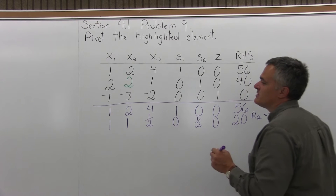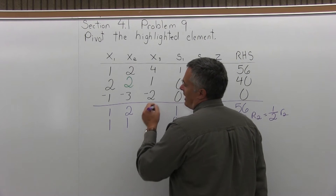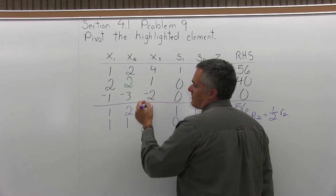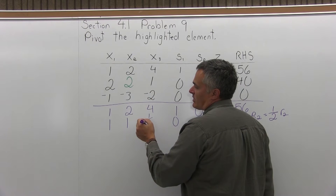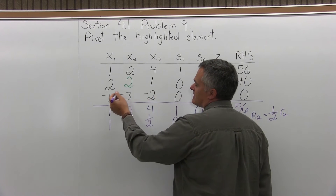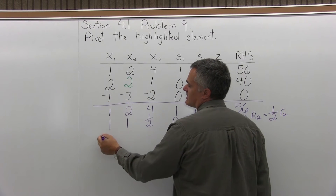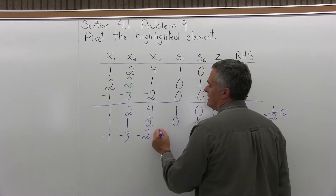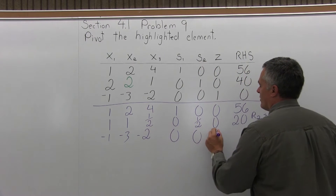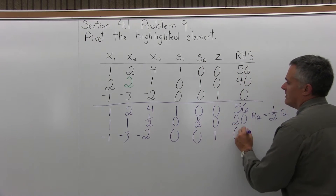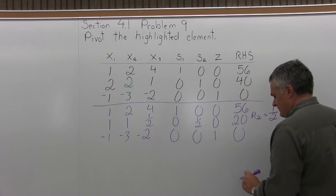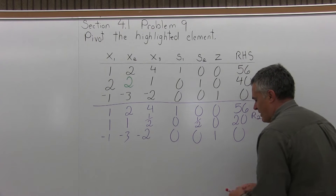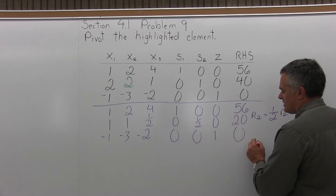In terms of making the 1, I don't involve any other rows. So the bottom row stays the same: negative 1, negative 3, negative 2, 0, 0, 1, and 0. I'll do the next matrix in a different color just to make each one stand out. So far, I've made the 1.